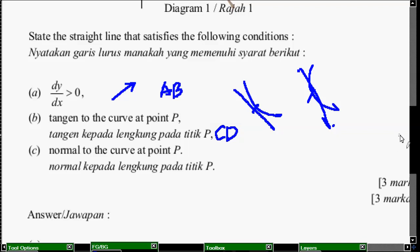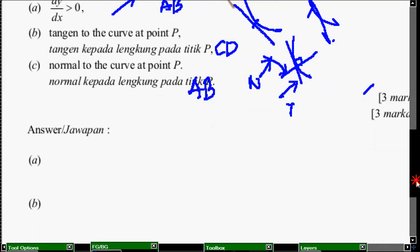And then, the last one is normal to the curve. Normal to the curve. Ni curve. Haa, dia 90 dajah daripada tangent. 90 dajah ini kita panggil normal. So, ni kita panggil tangent. Ni tangent, ni normal. So, ni teori je soalan ni. So, soalan ni, jawapannya adalah A, B. Dapat tiga markah. Ni soalan teori.